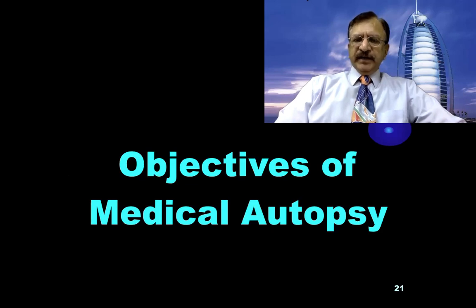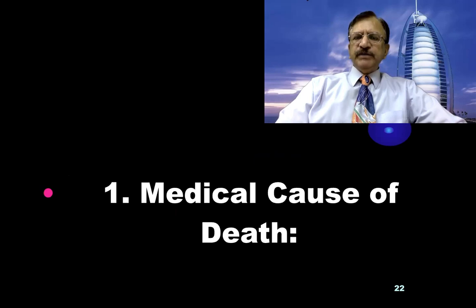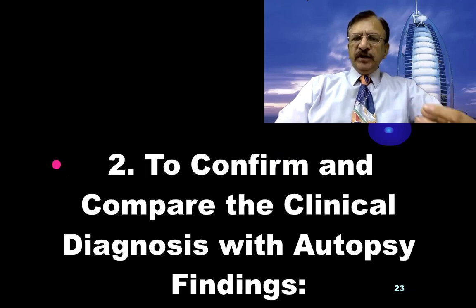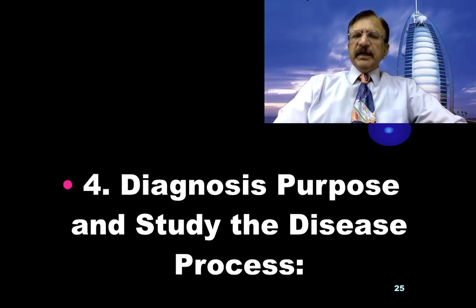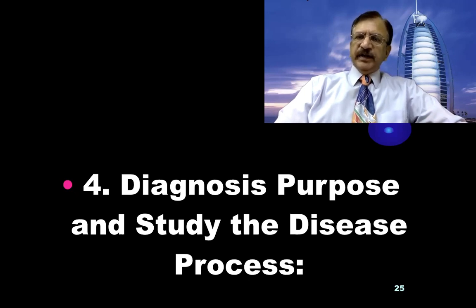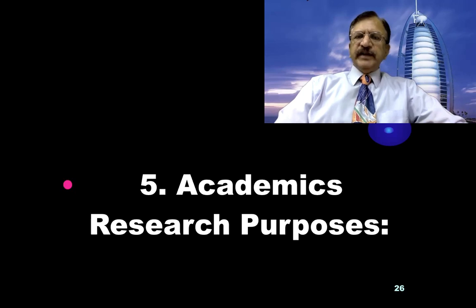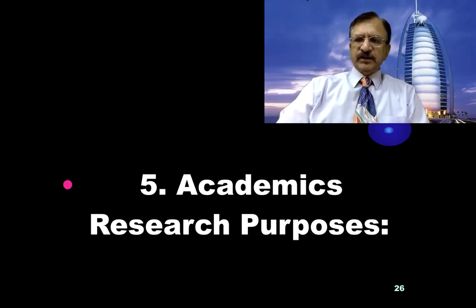What are the objectives of medical autopsies? Number one, the most important, we will try to know what is the medical cause of death, and to confirm and compare the clinical diagnosis with the autopsy findings. Then we want to see the effectiveness of the therapy which was instituted during life. For diagnosis purposes, we want to study the disease process and diagnose what was happening during life. And also for academics and research purposes — we want to know the most common causes, most common diseases, and how they progress and advance.